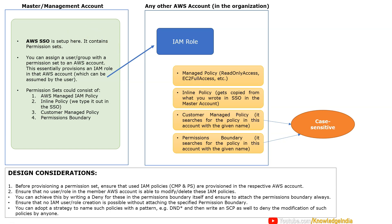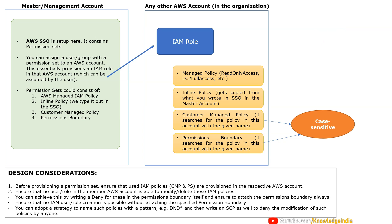What happens is when you actually provision this permission set in a particular member account: first, as part of SSO you will select a particular AWS account — a member account. Then you will select a permission set and a user or group. These three things you select and you press provision. What happens because of that is whatever policies you had written as part of the permission set, those policies are used and an IAM role gets provisioned in the member account. And whatever user you had selected, that particular user would be trusted to assume this IAM role which gets created in the member account.